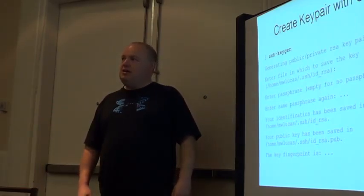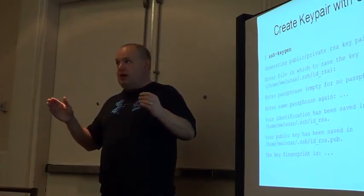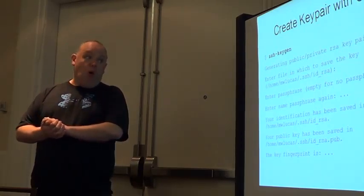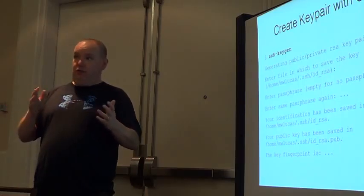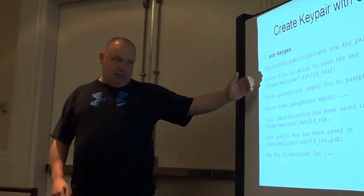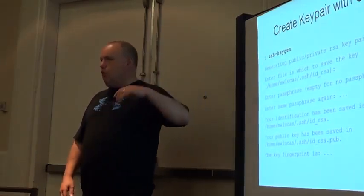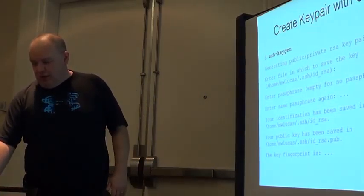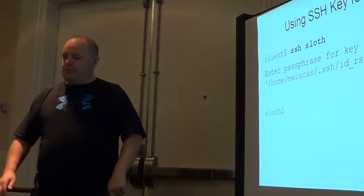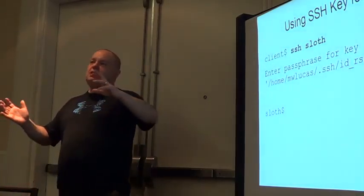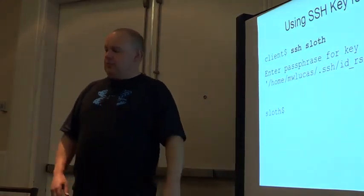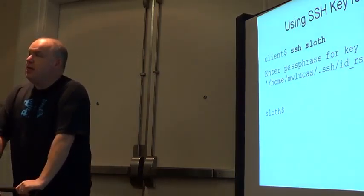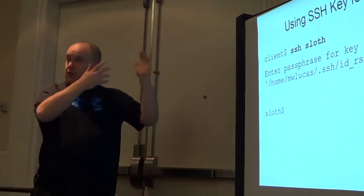It'll ask you to type the same passphrase again to make sure you can type it twice in a row. If you can't type your passphrase twice in a row more than once or twice, maybe you should use a different passphrase. It'll tell you where the key is, where the public key is, and what the key fingerprint is. Once you've copied the public key to the server, you can SSH to your server. SSH will prompt you for the passphrase, and you're in.